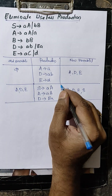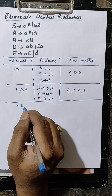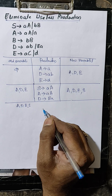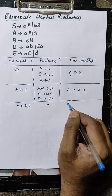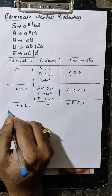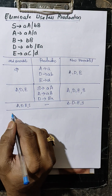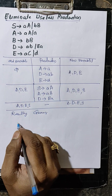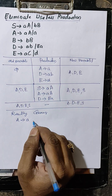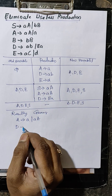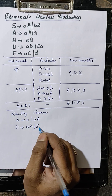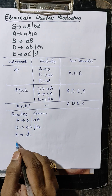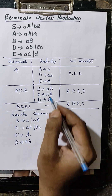Next, using this old variable, is there another variable producing a terminal? No, this is empty. And if old variable equals new variable, then stop. Resulting grammar: A produces A or AA, then D produces AB or EA or A, then E produces D, then S produces AA. This is the resulting grammar.